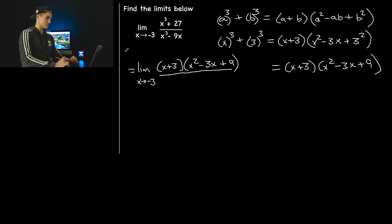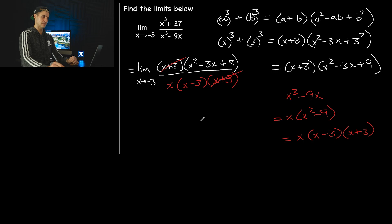Now let's see what the denominator factors into. We'll have x cubed minus 9x. We could take out an x, x squared minus 9, and notice that's a difference of squares. x minus 3, x plus 3. So the denominator factors into x times x minus 3, x plus 3. Then cancel the x plus 3 factors.